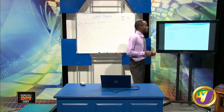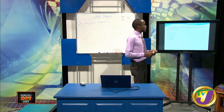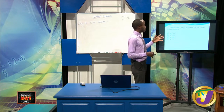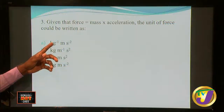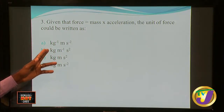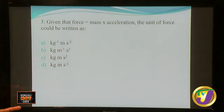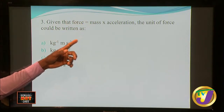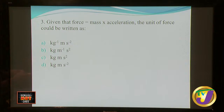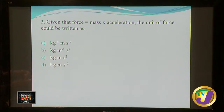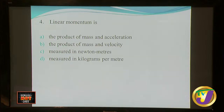Given that force equals mass times acceleration, the unit of force could be written as: the unit of mass is kilogram, and unit of acceleration is meters per second squared. Looking at all the units — if you see a negative one exponent, that indicates 'per,' meaning per kilogram, which you know automatically isn't right. Another option shows kilogram but says 'per meter' — that isn't correct either. The correct one is kilogram times meters per second squared, where a negative exponent means 'per.' The correct answer there would be D.